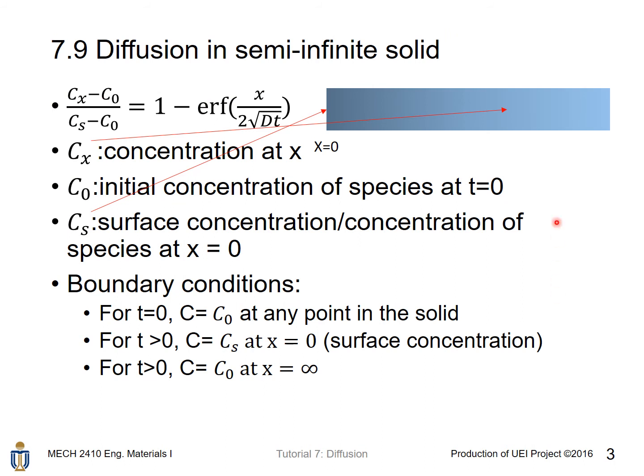Diffusion in semi-infinite solid, which is the most useful solution of the partial differential equation I have just mentioned. The diffusion in semi-infinite solid is described as this equation: Cx minus C0. Cx is the concentration at point x minus C0. C0 is the initial concentration of species at time equal to 0, which is the initial time.